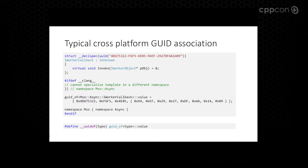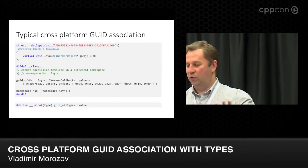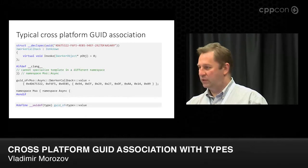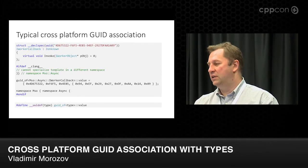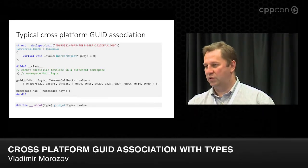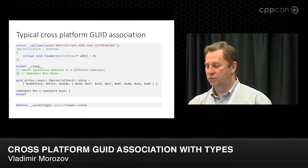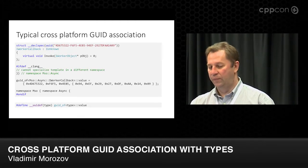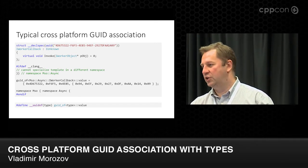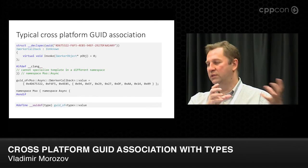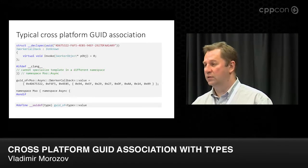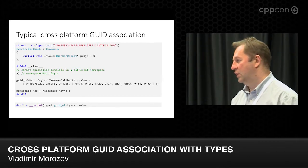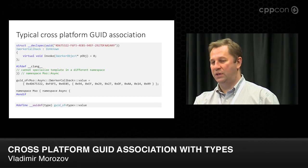I was not the first person to come up with this idea, but this is what I saw in our code and I expanded on it. Technically all this code is hidden behind macros. The main idea is: you have an interface using a Visual Studio construct like DeclSpec to define your GUID, and somewhere below, people typically have some kind of template with a template specialization, specifying for a given type what GUID they would like to have.